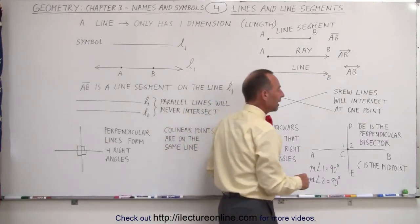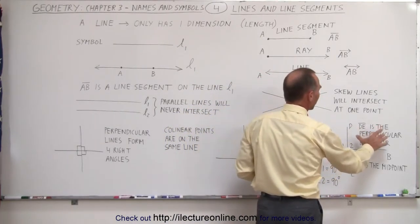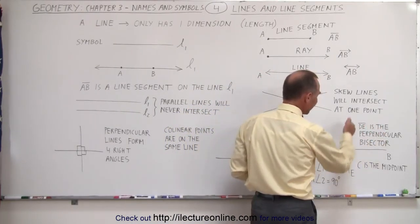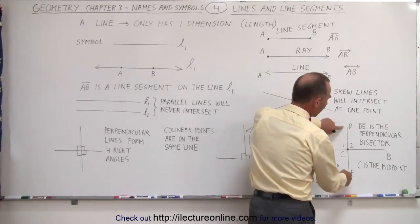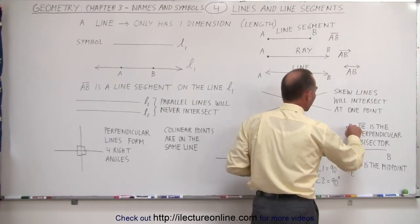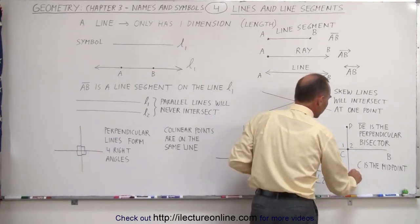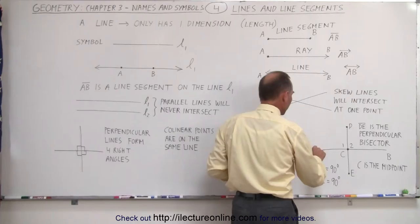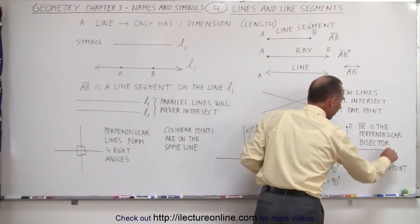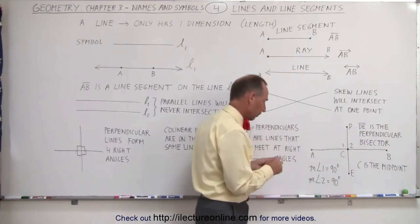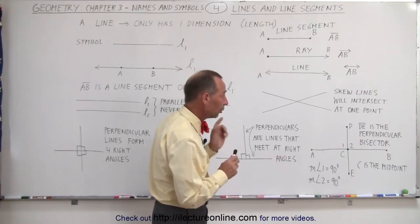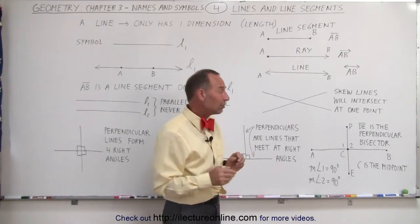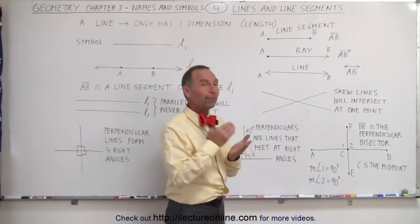Here we can say that DE is the perpendicular bisector. Now DE is a line segment - it starts at D, it ends at E. Perhaps I can denote that with a little point right there so we know it doesn't go on forever. Also, we have a line segment from A to B. I can draw little dots there indicating this is just a line segment.